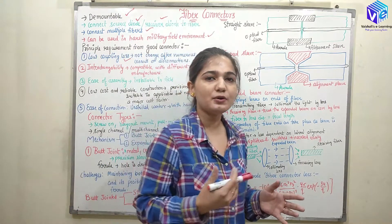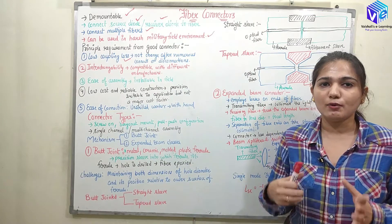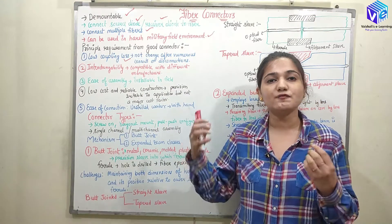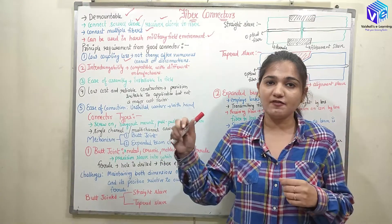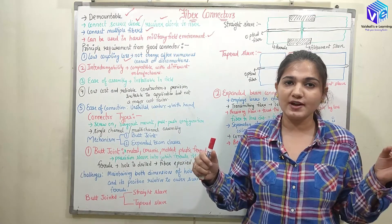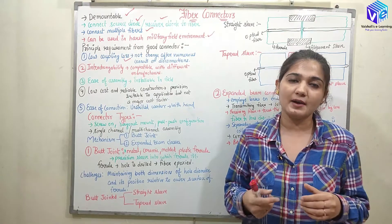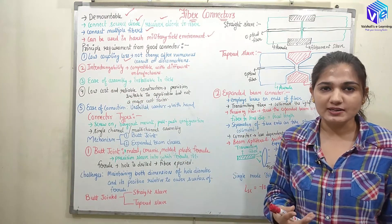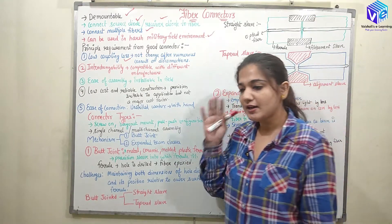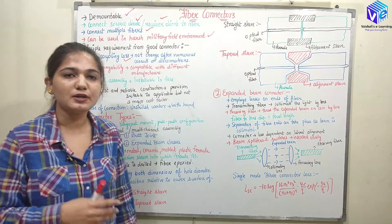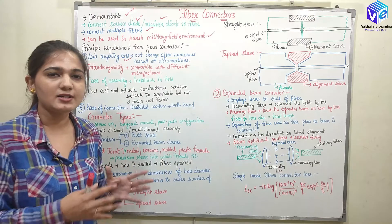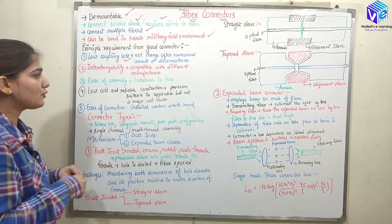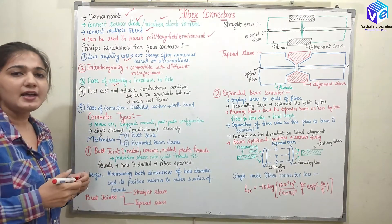The next requirement is interchangeability, meaning the same connector can connect devices from different manufacturers. If you have one optical fiber from one manufacturer and another from a different manufacturer, a good connector can connect both — it is not manufacturer-specific. After that we have ease of assembly: even a non-technician person should be able to assemble it, so if a connection is broken, a non-technician can go and reconnect it. It should be easily installable in the field.